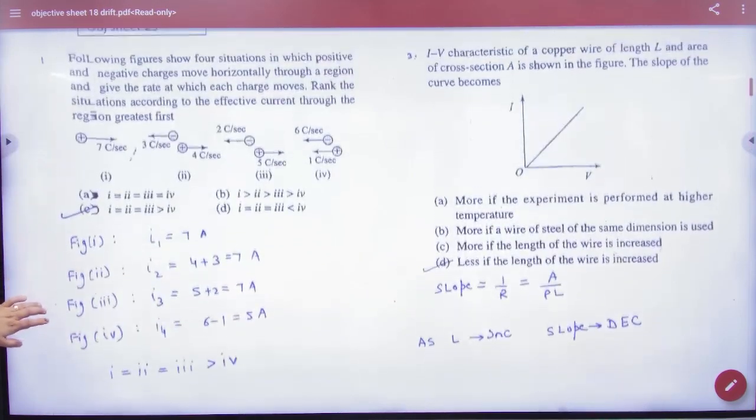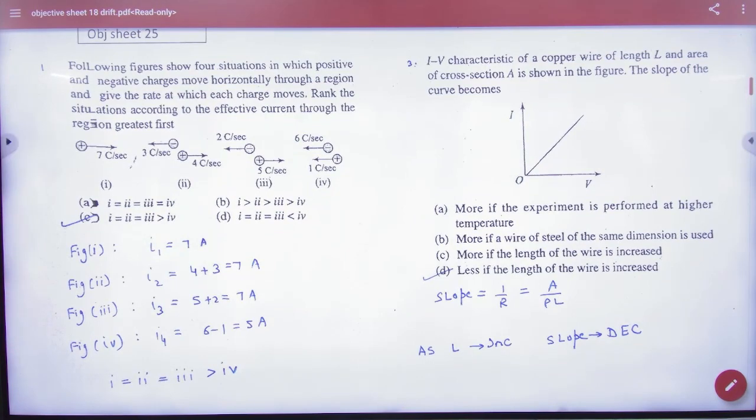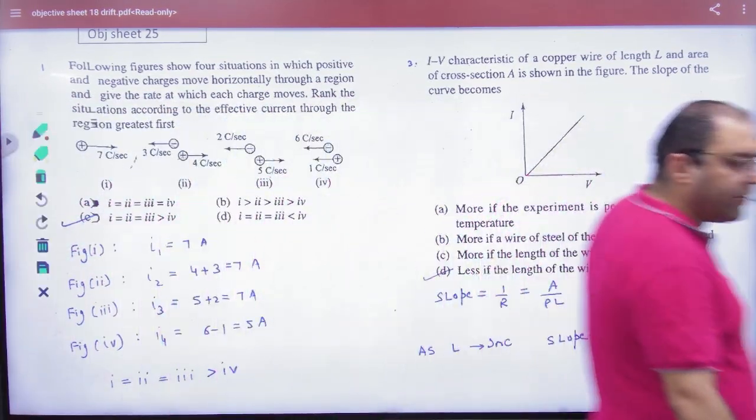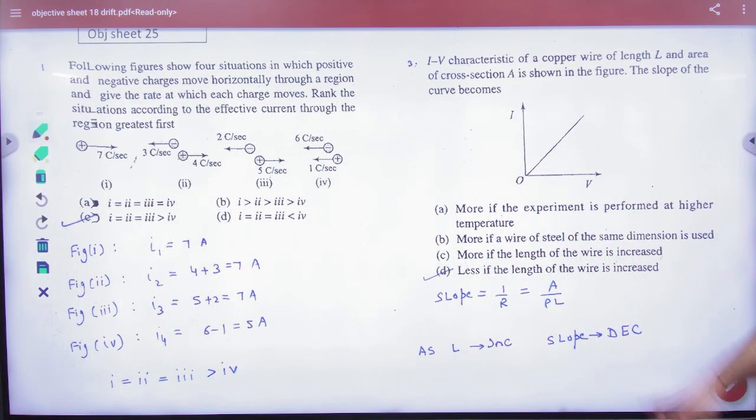As in question number 3, that is why because I upon V the slope will come. What will you give? Reciprocal of resistance.